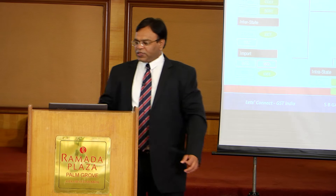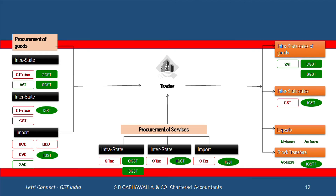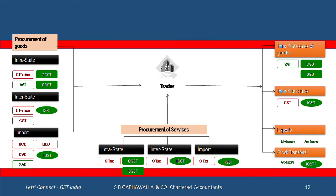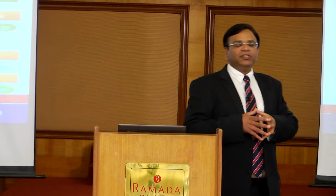As far as a trader is concerned, there will be a lot of change. Today when a trader buys goods intrastate, there's excise and VAT. He is not eligible for excise credit; if he's a dealer he can pass on the credit as a first-stage dealer but is not eligible for credit himself. That changes moving forward — excise gets replaced by CGST, and that CGST is available as a credit to the trader.